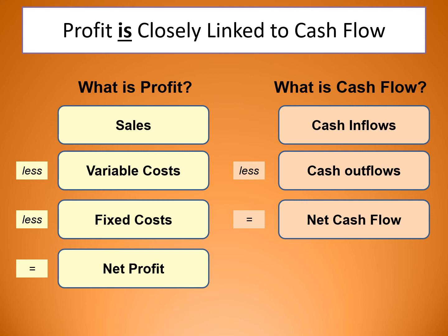So here is profit: sales minus variable costs minus fixed costs — if we add those together, that's total costs, giving you your net profit. But cash flow is cash inflows — money coming in — take away cash outflows — money going out of the business — and that gives you your net cash flow.